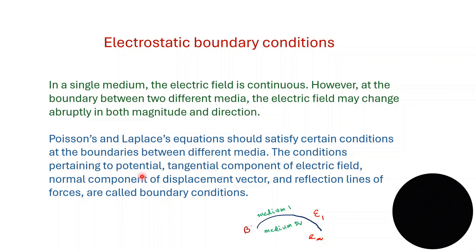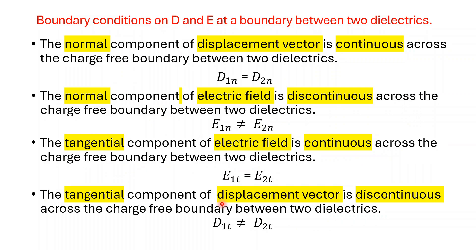Poisson's and Laplace's equations should satisfy certain conditions at the boundaries between different media. The conditions pertaining to potential, tangential component of electric field, normal component of displacement vector, and reflection lines of forces are called boundary conditions. We are now in a position to study the boundary conditions on D, the displacement vector, and E, the electric field, at a boundary between two dielectrics. Generally, we can identify four specific conditions: two that apply to the normal and tangential components of the displacement vector, and two that pertain to the normal and tangential components of the electric field.